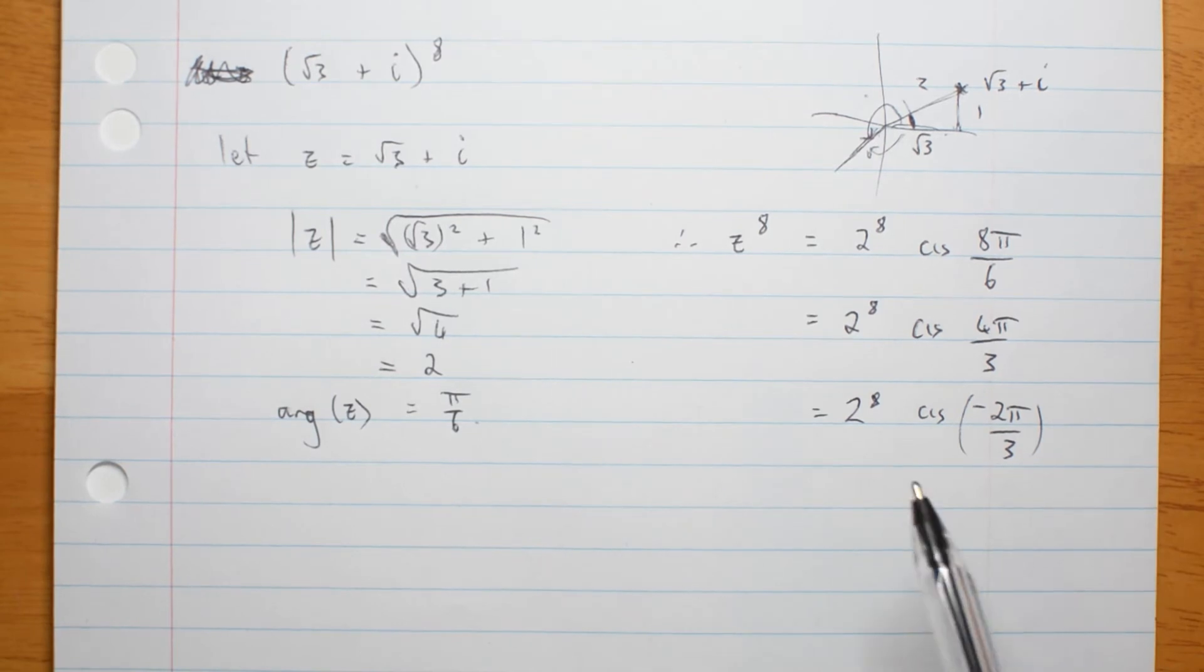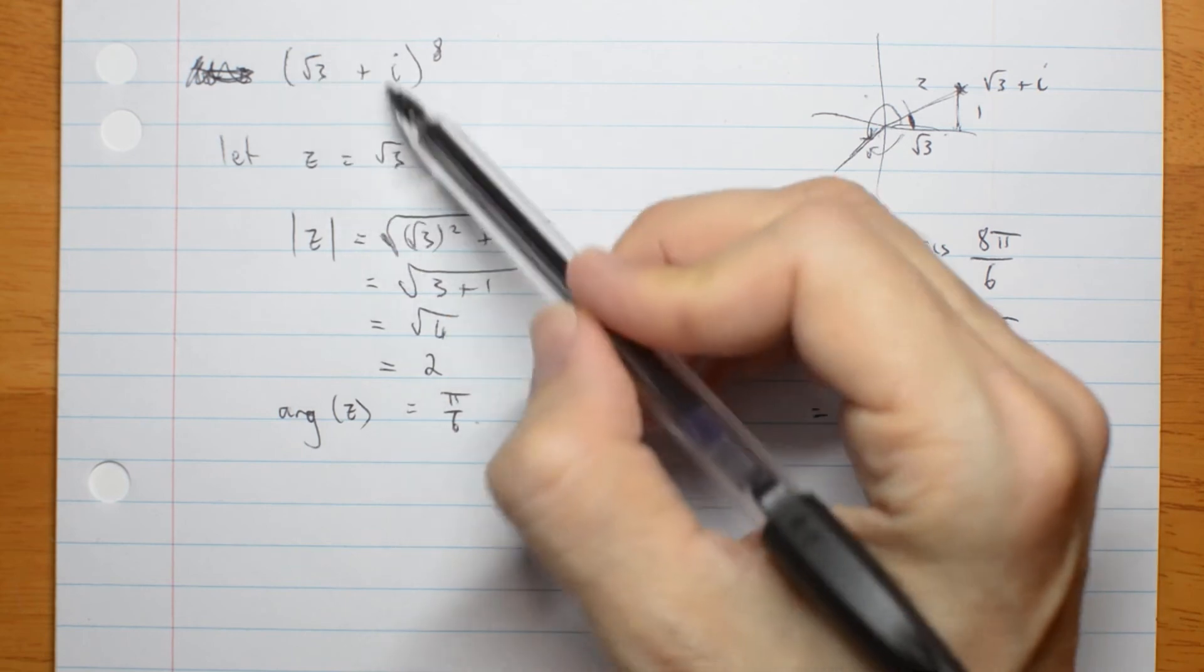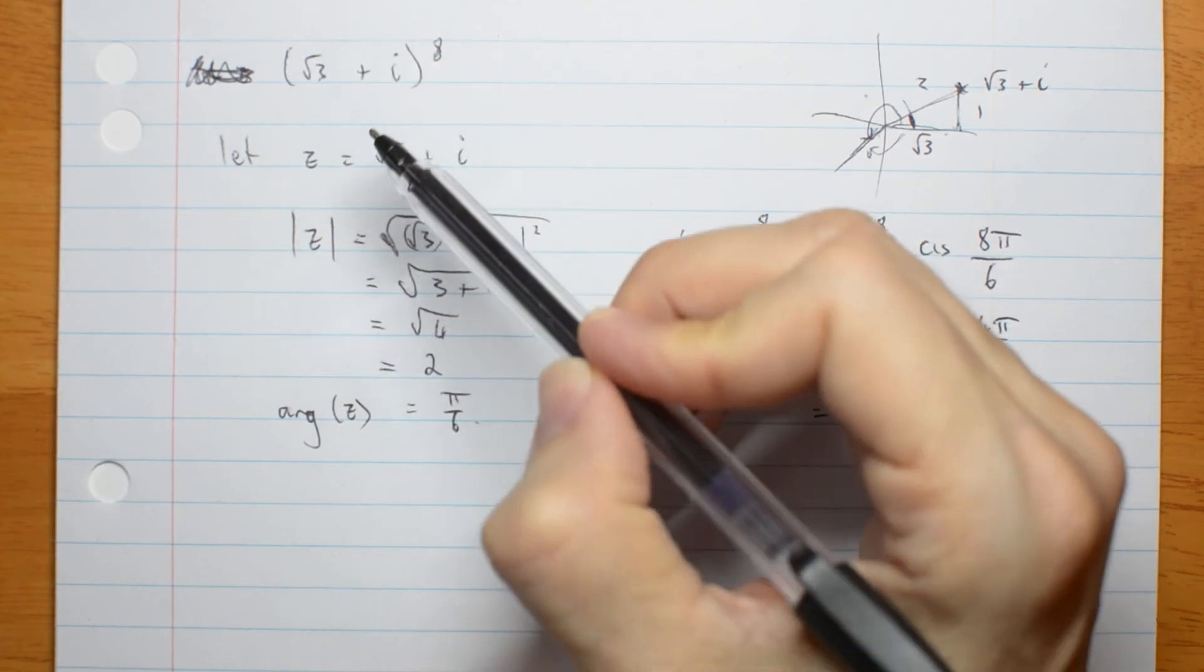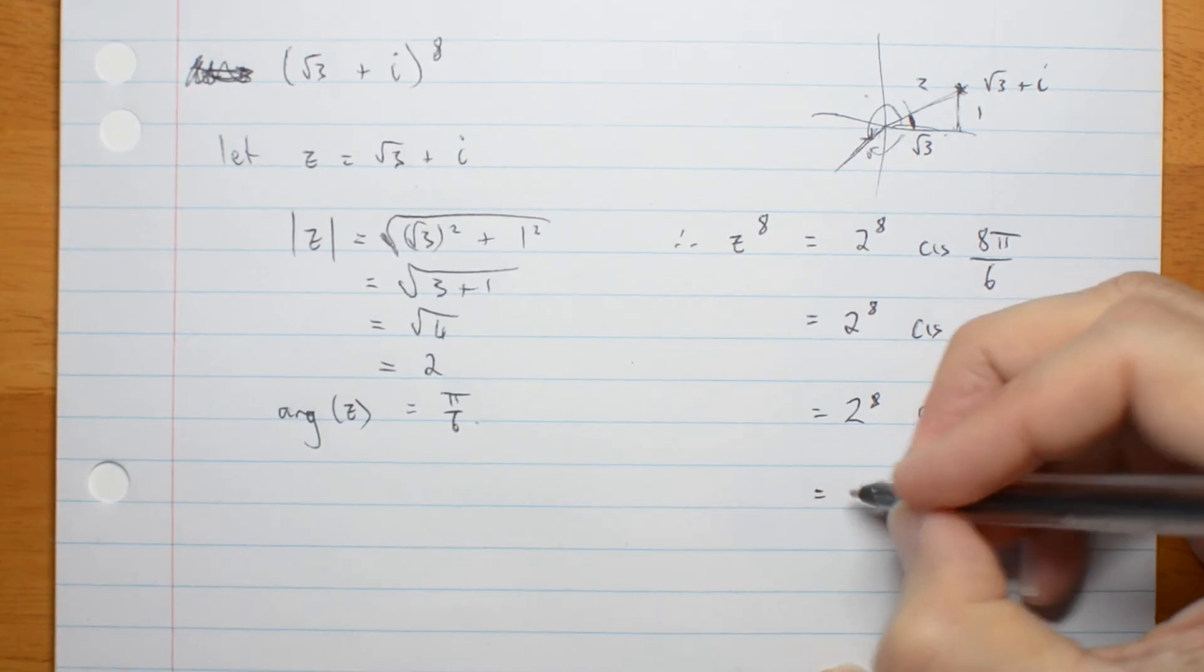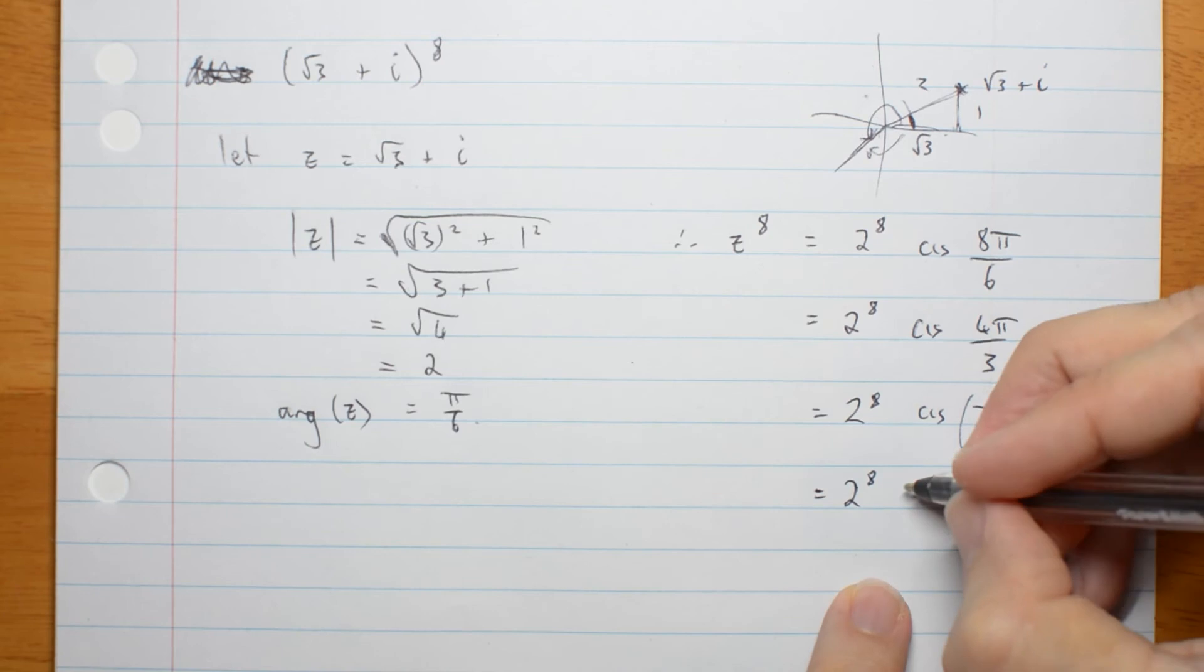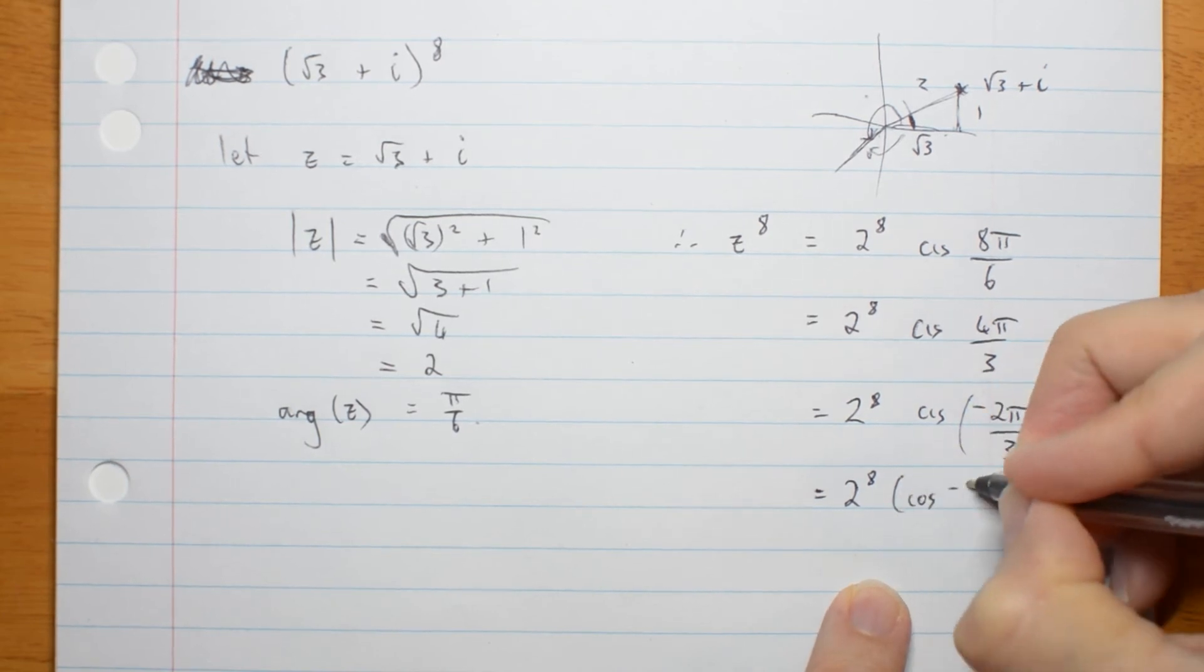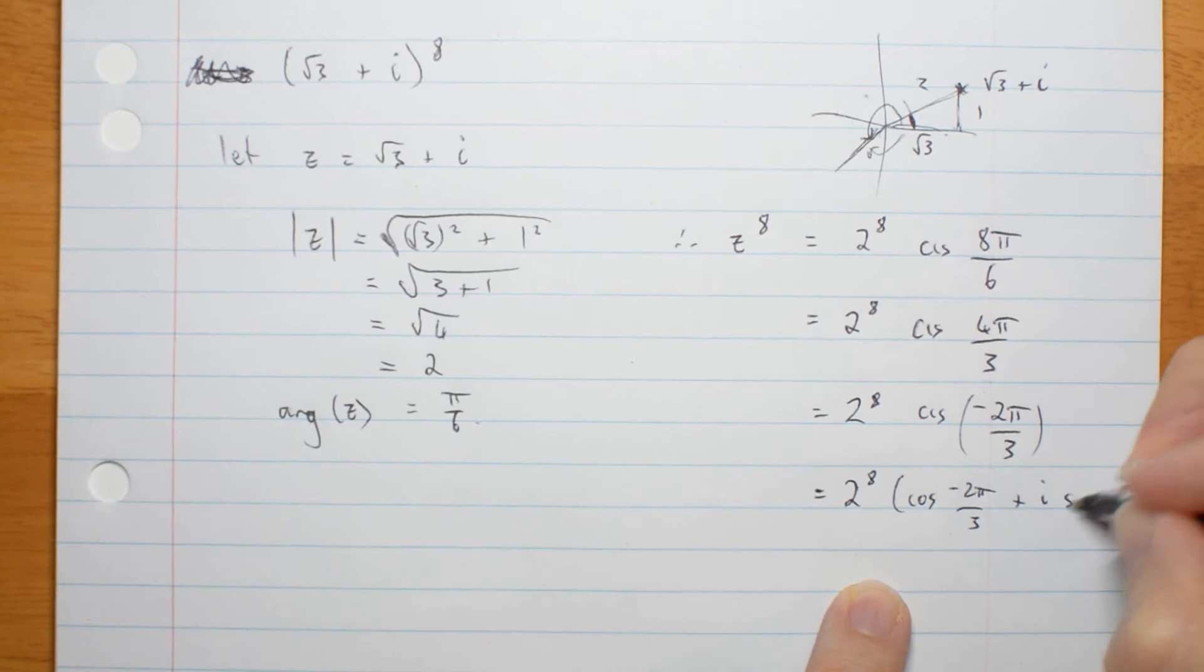If all I had to do was work out z to the 8, this would be fine. But my answer here is in polar form and my question was in Cartesian form. So it's best if I can to rewrite my answer in Cartesian form. And the way I do that is I just replace cis with cos negative 2 pi on 3 plus i sine negative 2 pi on 3.